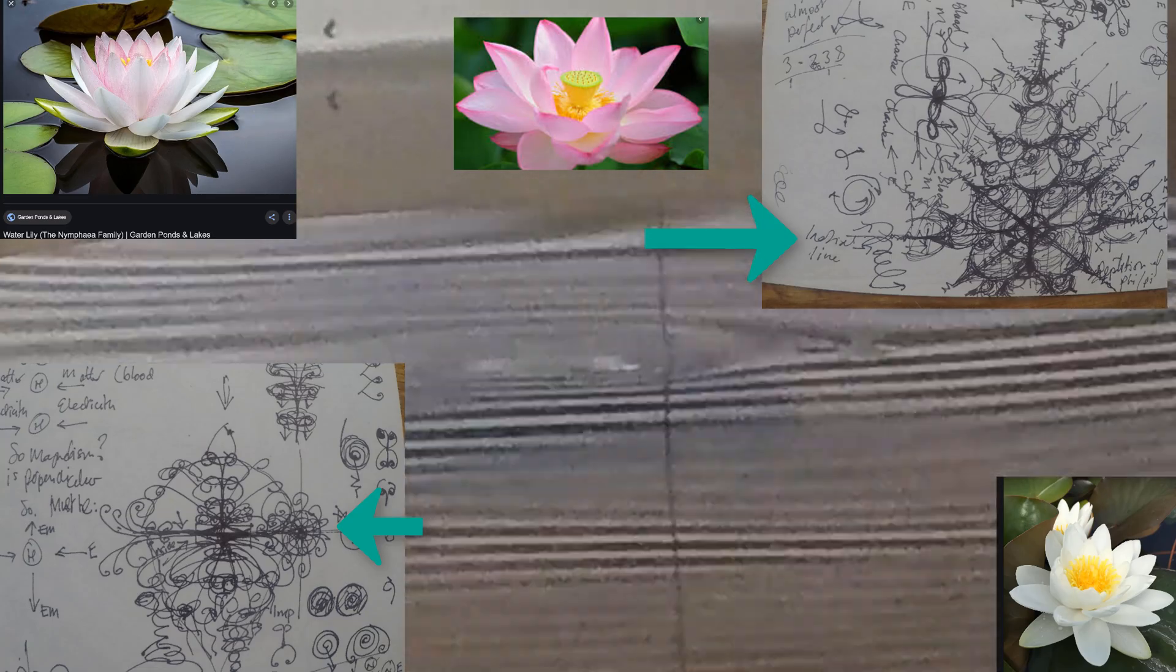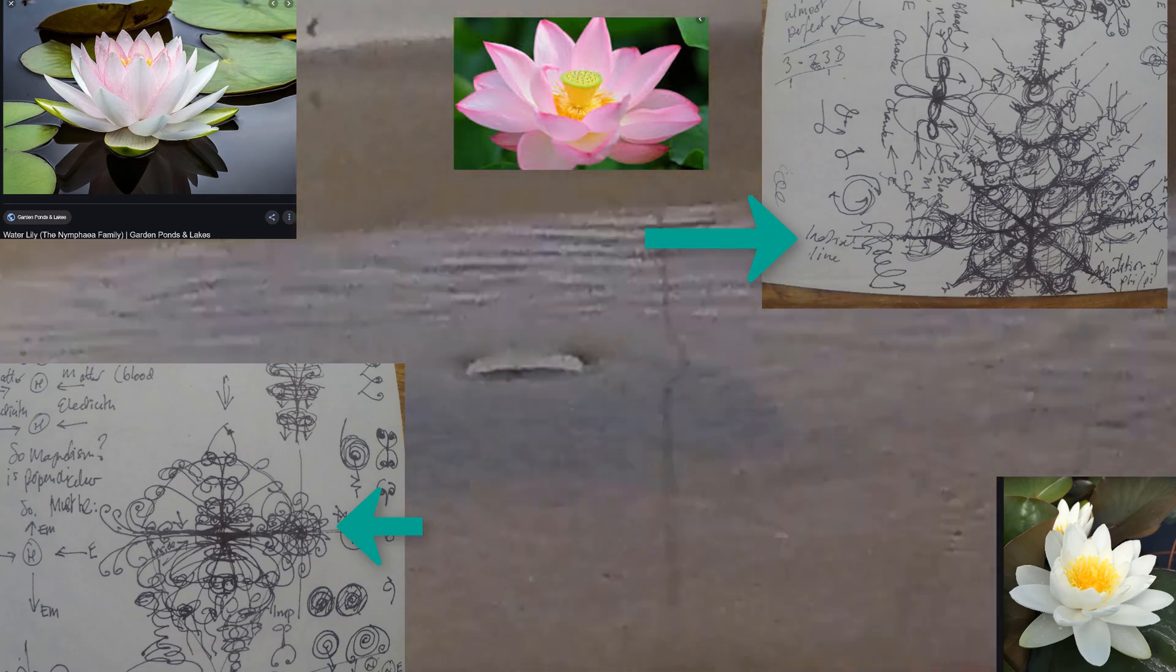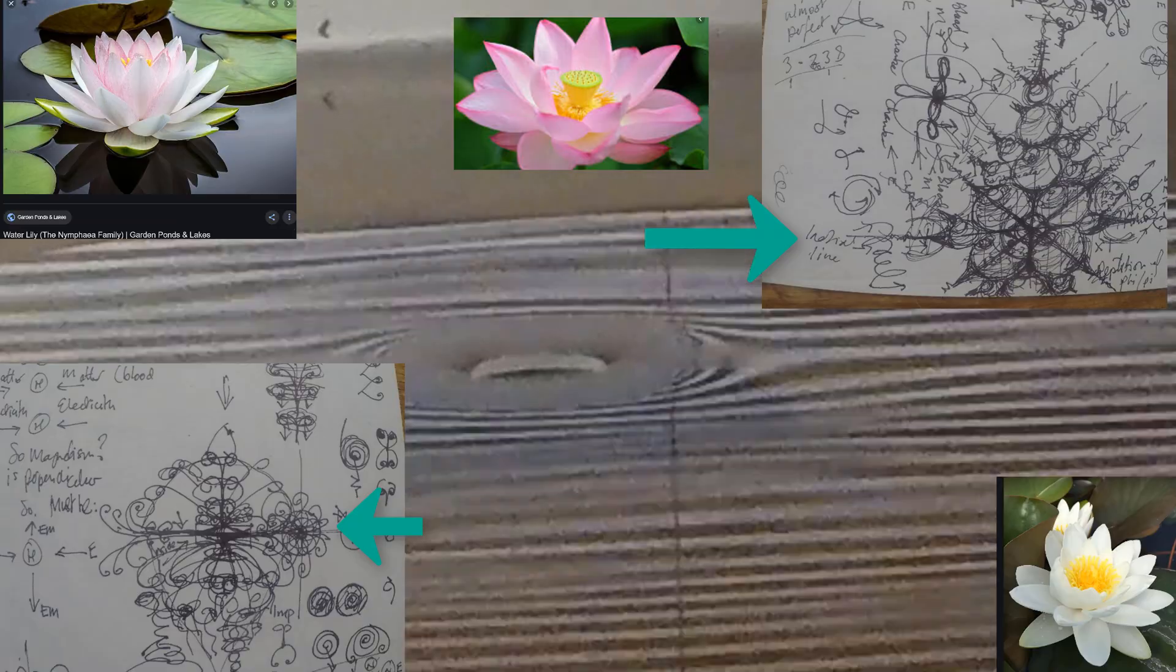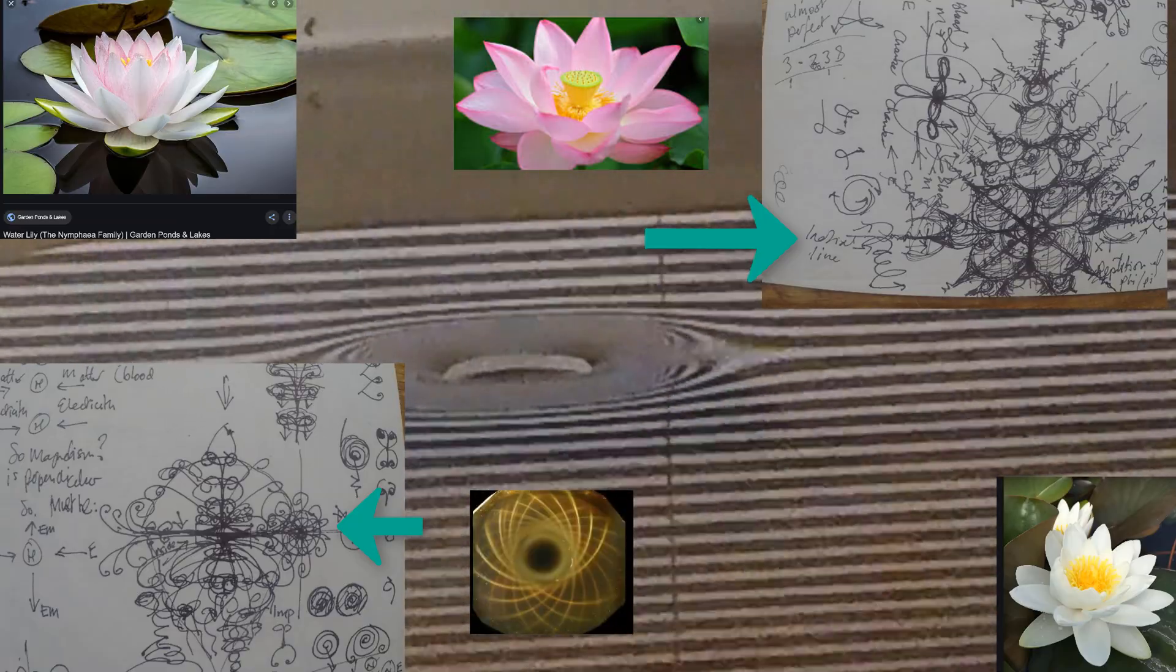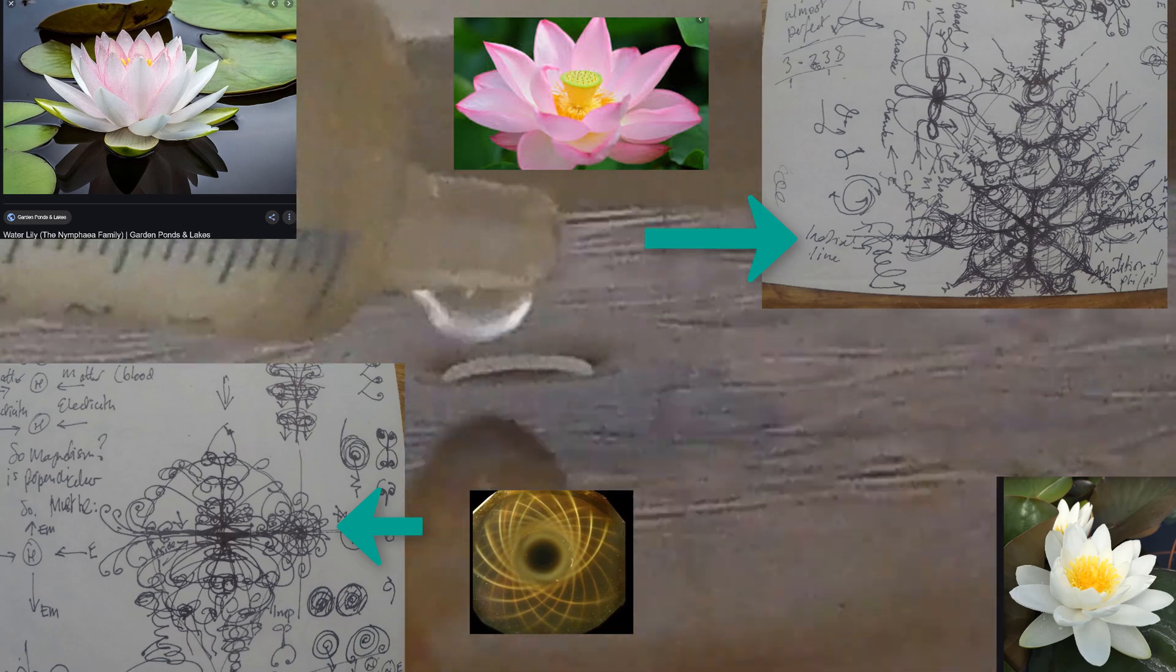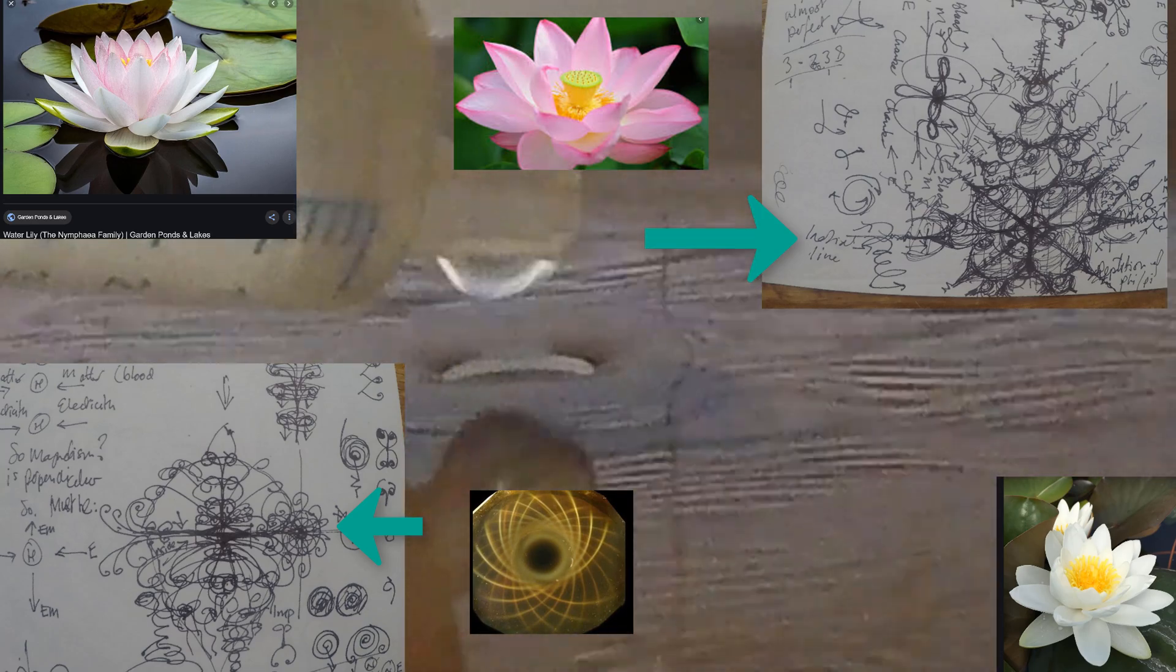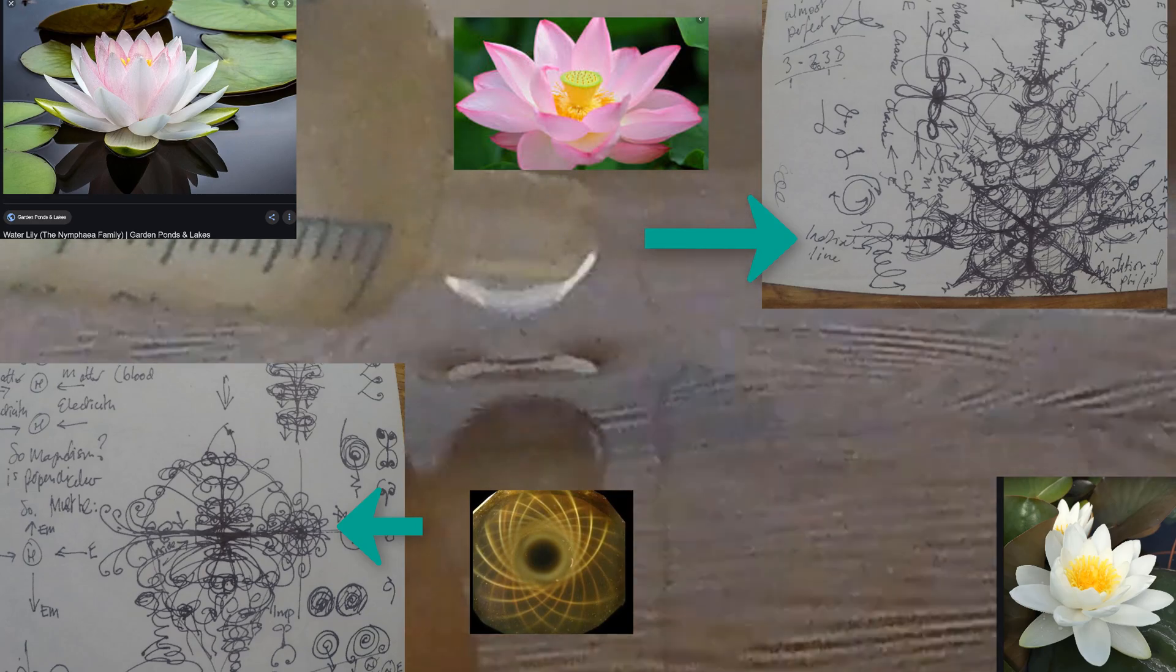That is found on every magnet and every single atom in the universe because all atoms are electromagnetic which means they have a magnetic field and all magnetic fields look like a lily and there are many religions in the world.